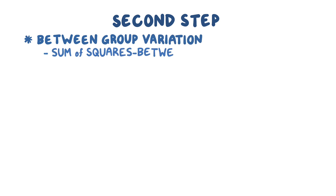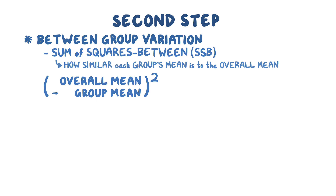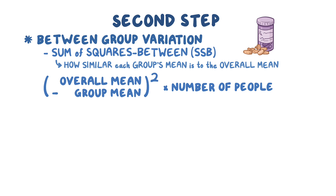The second step is to find the between-group variation, also called the sum of squares between, or SSB. The SSB measures how similar each group's mean is to the overall mean. To find it, we subtract each group's mean from the overall mean, square it, then multiply by the number of people in that group. For time 1, we subtract 138 from 133, getting negative 5. Negative 5 squared is 25, and 25 times 10 is 250.